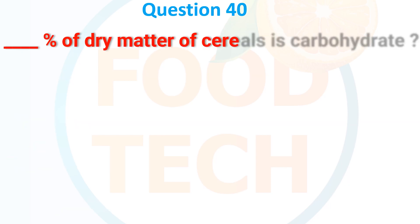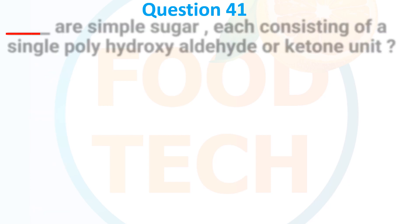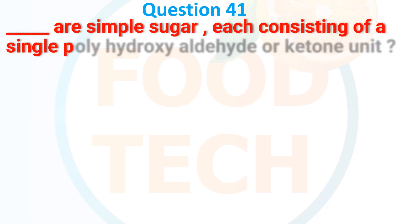Question 39: What percent of dry matter in cereal is carbohydrate? A. 80%, B. 70%, C. 90%, D. 60%. The answer is A. 80%.